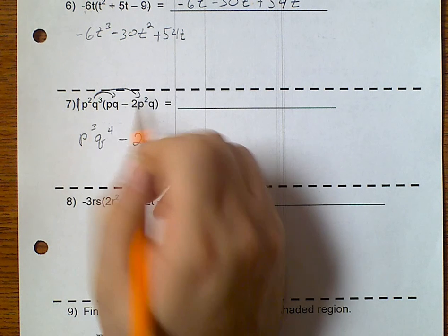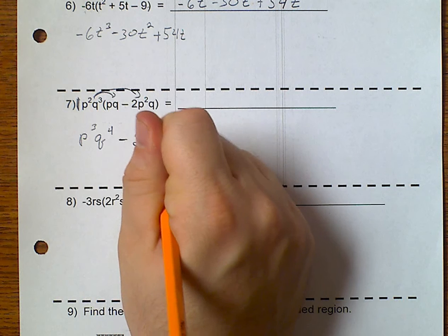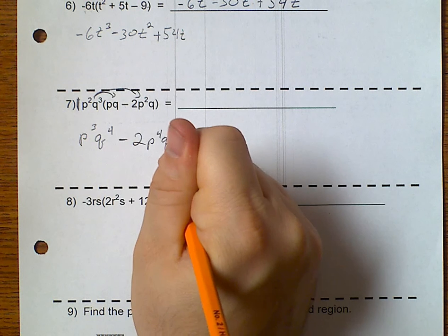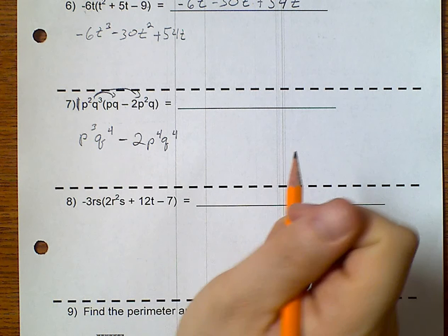Because this is an invisible 1. So, p squared times p squared is p to the 4th. And, q to the 3rd, q is q to the 4th.